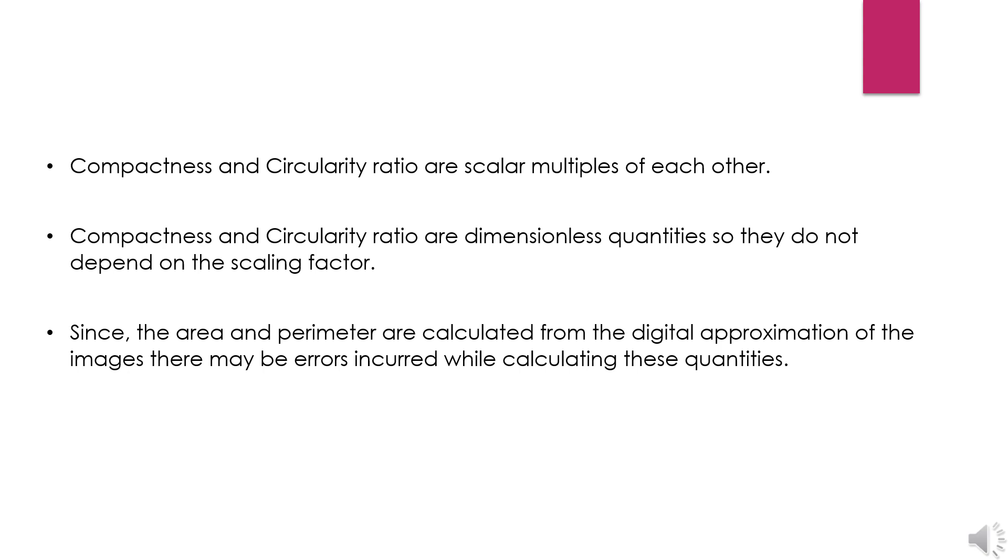Since the area and perimeter are calculated from the digital approximation of the images, there may be errors while calculating these quantities. Since compactness and circularity ratio are calculated from the area and perimeter, the compactness and circularity ratio might also contain errors.